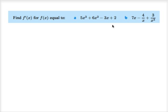So let's go ahead and make sure we're on the same page by doing A. So for A, we're given 5x³ + 6x² - 3x + 2, and we're calling this our function, our f(x).